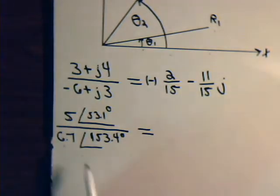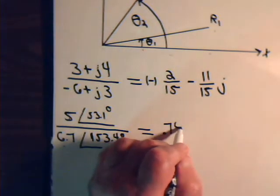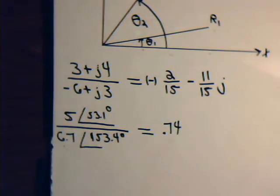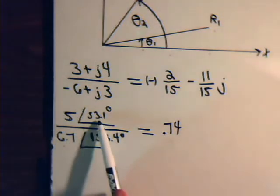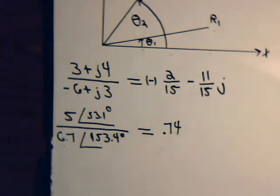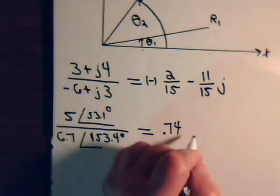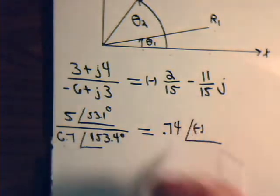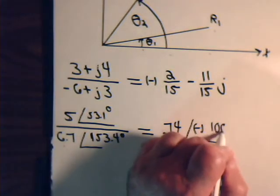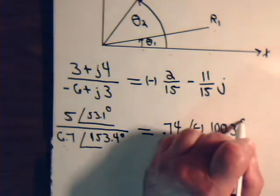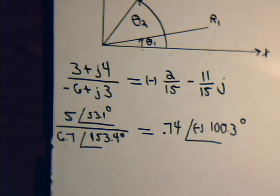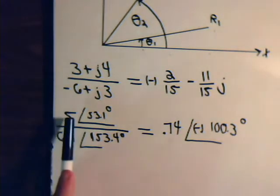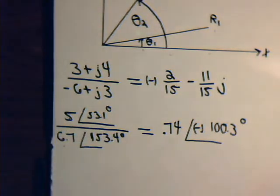Now to divide the two vectors, divide their magnitude, 5 divided by 6.7, we get about, not quite three-fourths, 0.74. And then we have 53.1 minus 153 and 4 tenths. So for the angle, it is minus 100.3 degrees. And that's it, we've done the division. Just simply divide the magnitudes and subtract the angles.